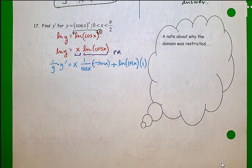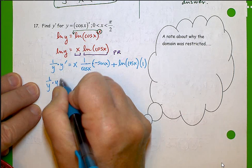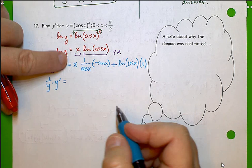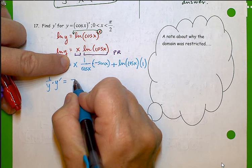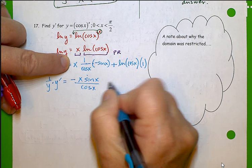Okay, so let's clean this up a little bit. I'll leave the left-hand side as is. On the right, what do I have here? Negative x sine x over cosine x plus natural log of cosine x.